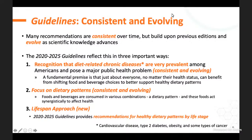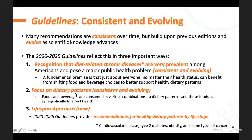Looking at the guidelines, they are described as consistent and evolving. Looking over reports every five years, many recommendations are consistent between 2015 and 2020, but they build upon additions and evolve. The guidelines reflect this in three ways: recognition that diet-related chronic diseases are very prevalent and pose a major health problem; a fundamental premise that just about everyone, regardless of health status, can benefit from shifting food and beverage choices; and a focus on dietary patterns, which began in 2005, was amplified in 2015, and continues in 2020.